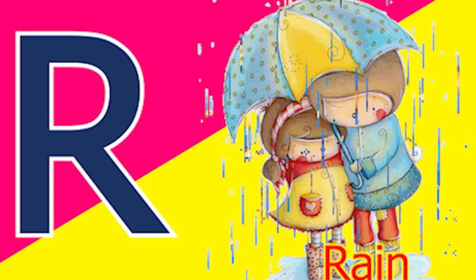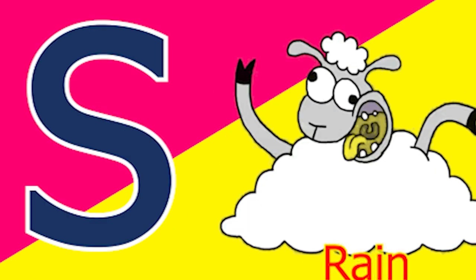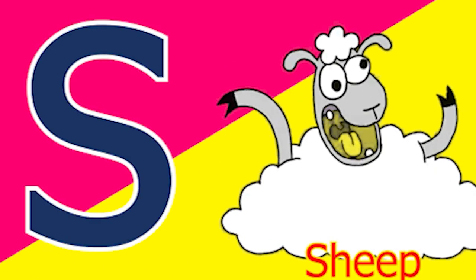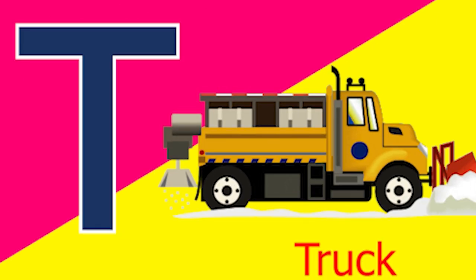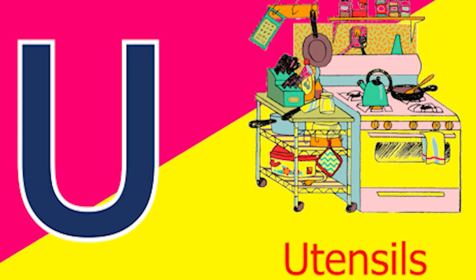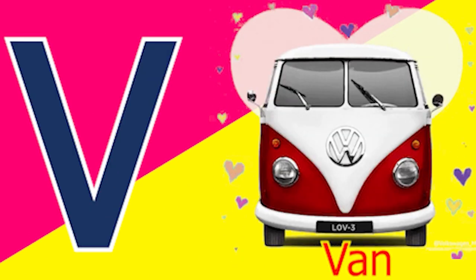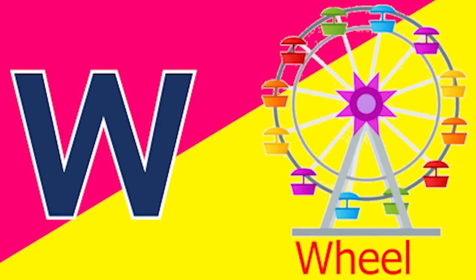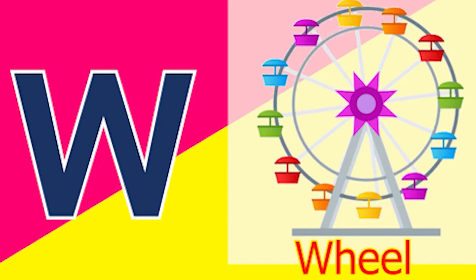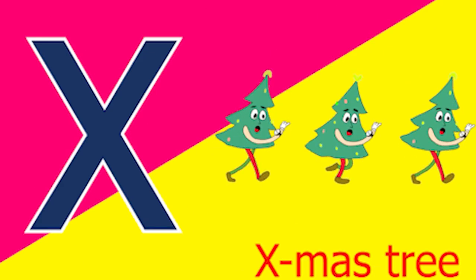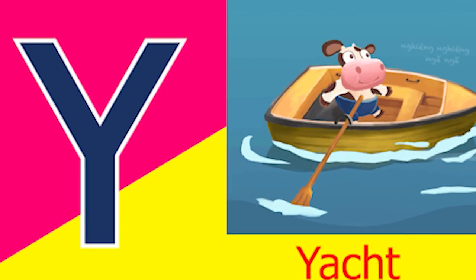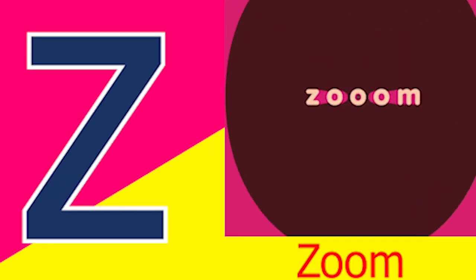R for rain, S for sheep, T for tub, U for utensil, V for van, W for wheel, X for accessory, Y for yacht, Z for zone.